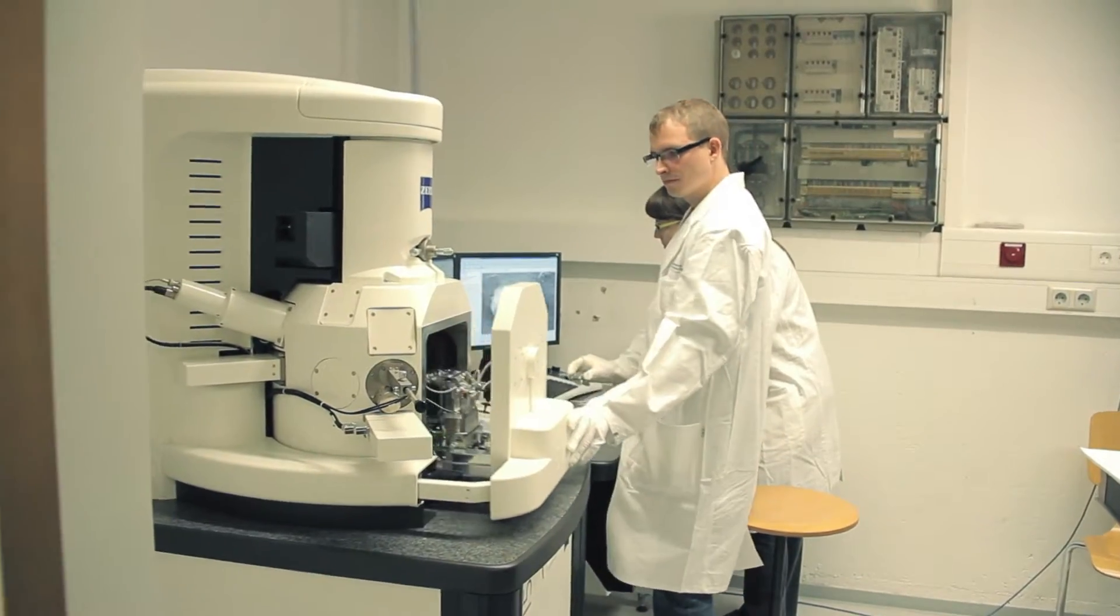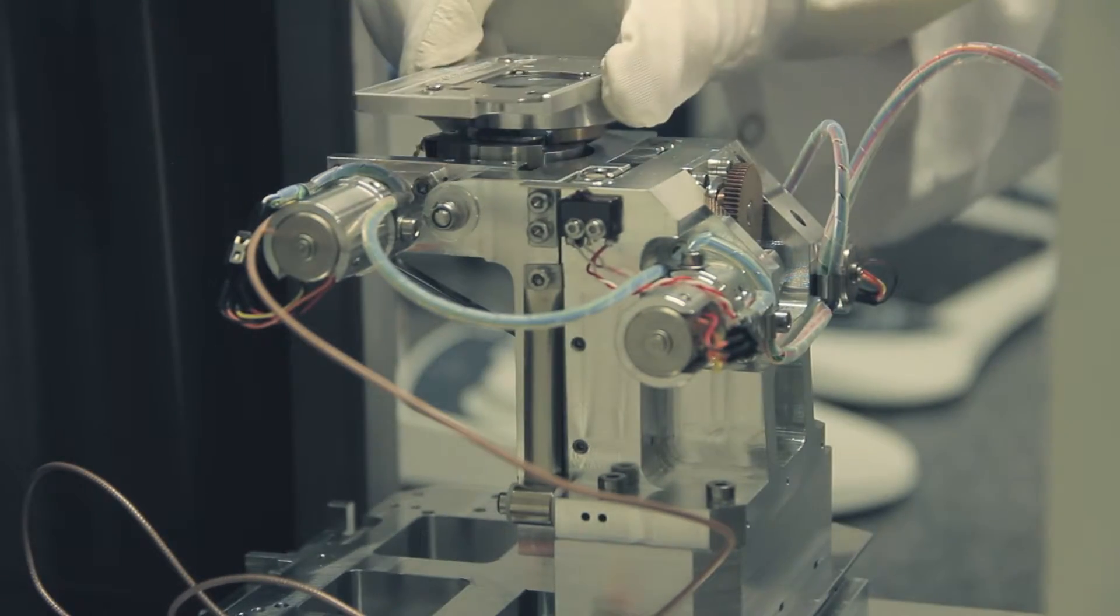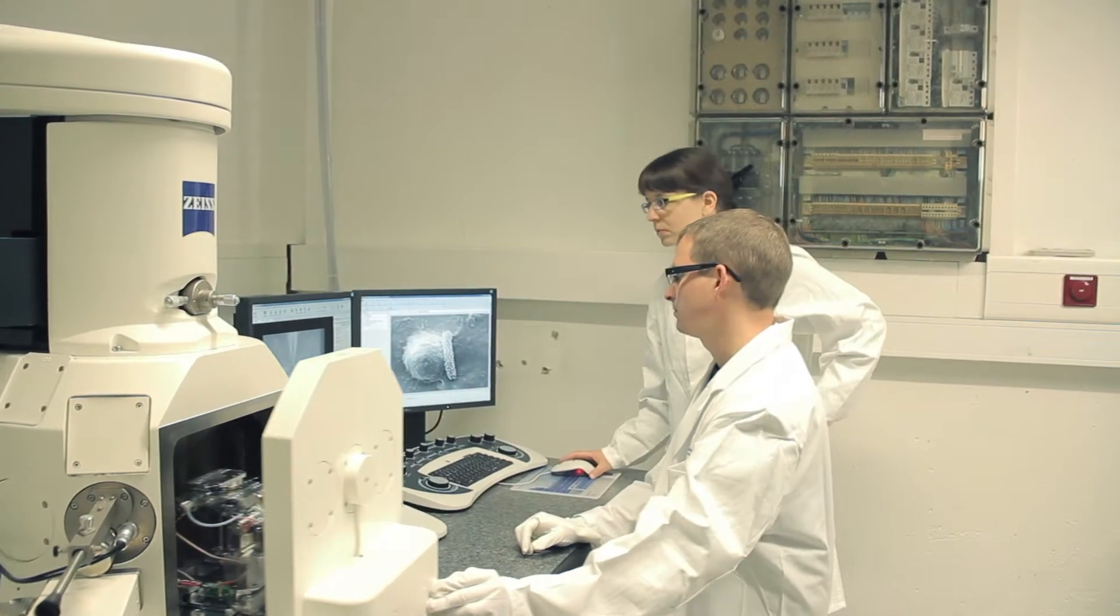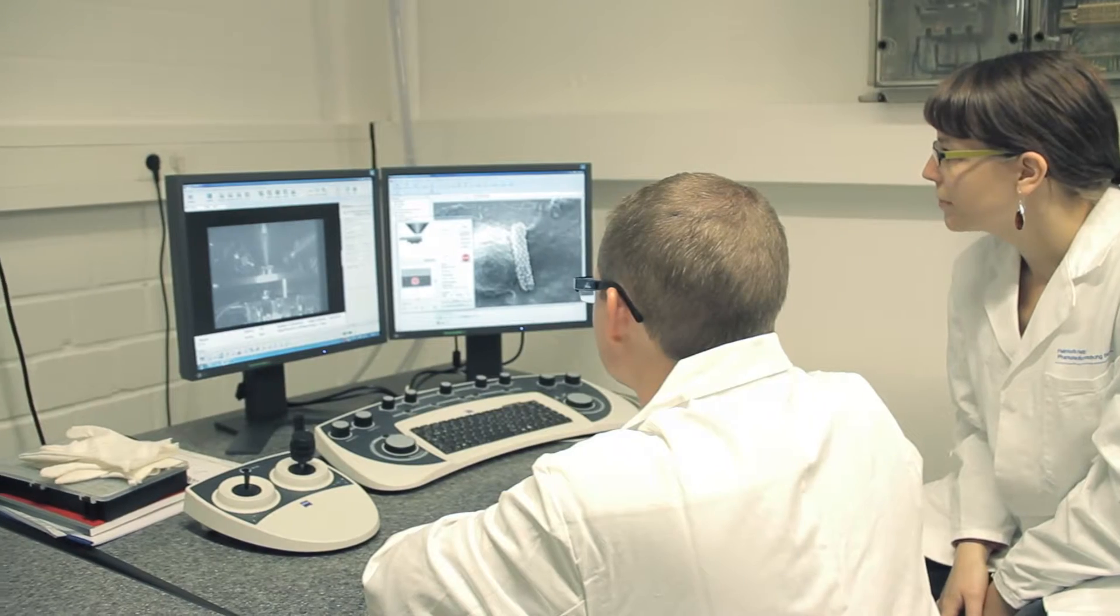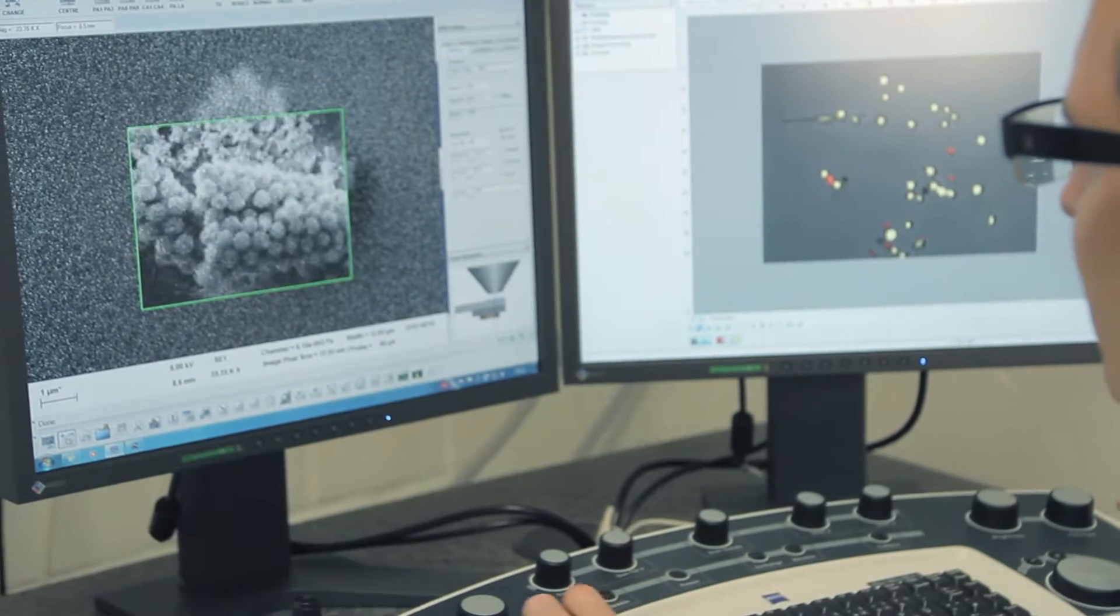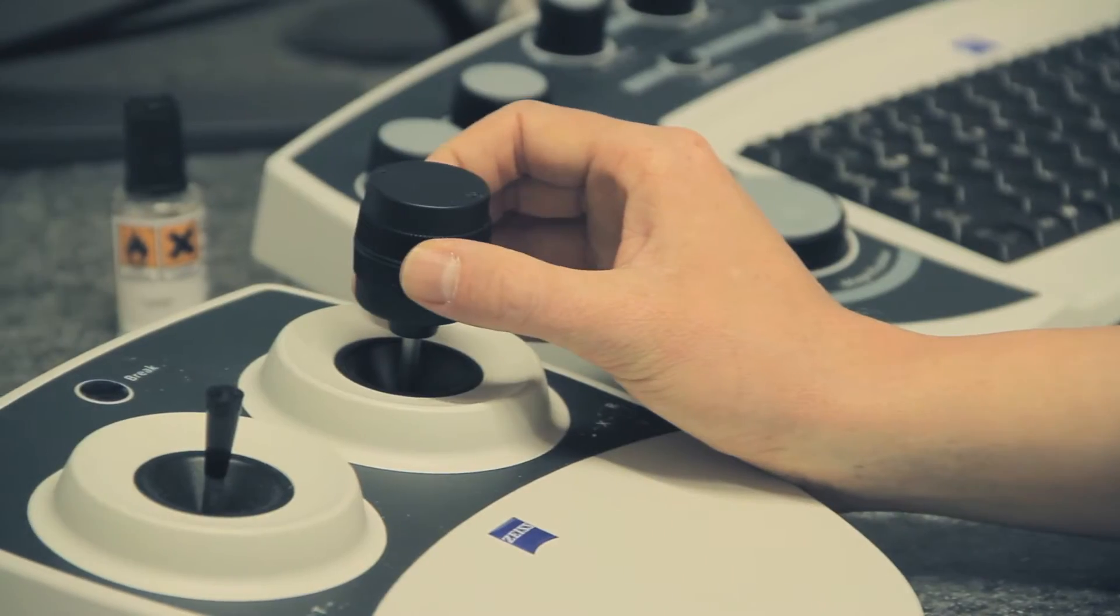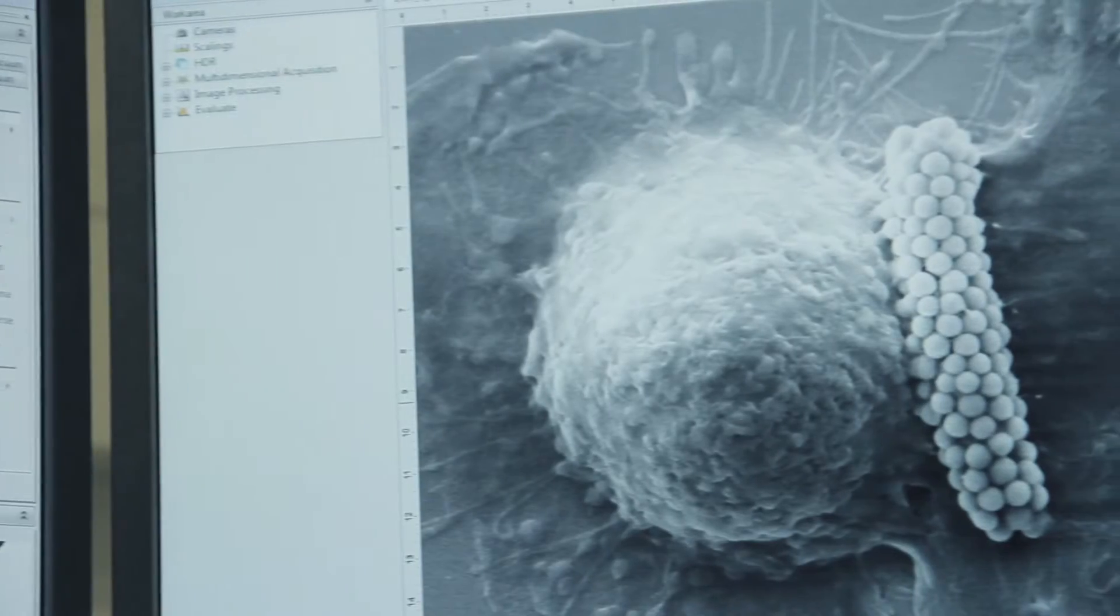The latest microscopy methods enable us to determine the exact quality, size, and shape of the particles. We use light scattering for determining the size. An electron microscope can be used to view particles on a nanoscale and to examine their size distribution and surface structure properties.